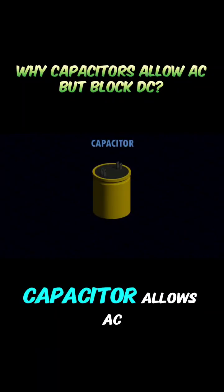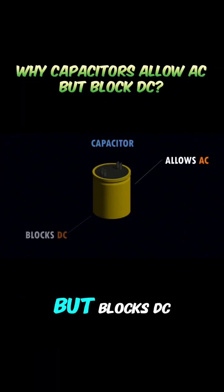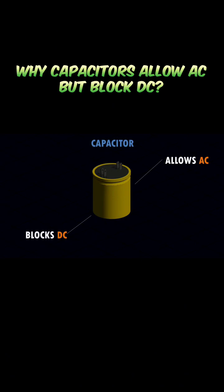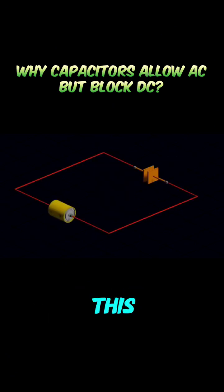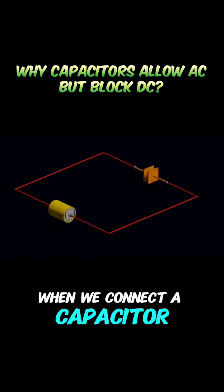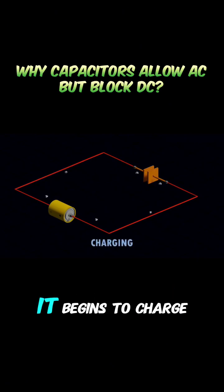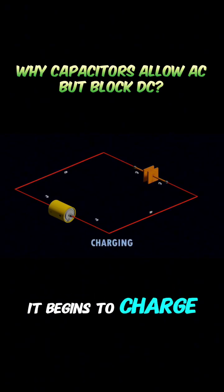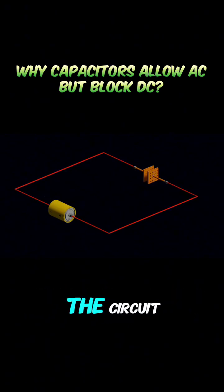We all know that a capacitor allows AC but blocks DC. Let's explore the reason behind this. When we connect a capacitor to a DC power supply, it begins to charge, causing a current flow in the circuit.